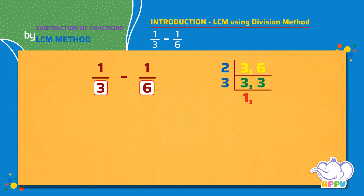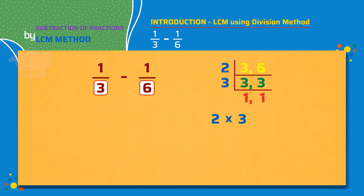Again, 3 is divisible by 3, we get 1. We then multiply the prime numbers we used for dividing. 2 times 3 equals 6. Here 6 is the least common multiple, that is the LCM.